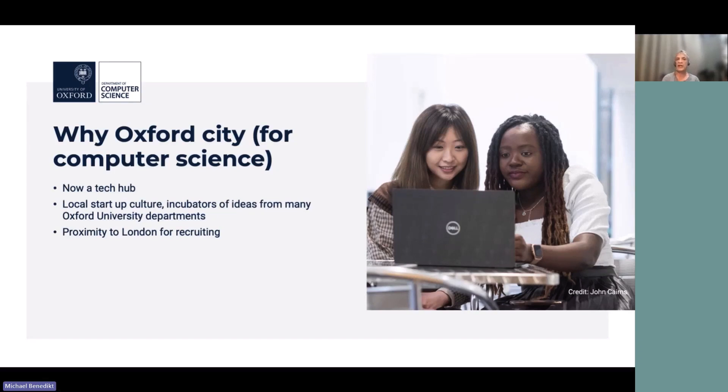Oxford is now really a tech hub. There's a couple aspects to this. It has a big local startup culture. And a lot of this is based on spinoffs from the university, including from our department. There's things like Venio, GIF Blue, Semel, Dark Blue Labs, Oxford Semantic Technologies, some of them just in the last year or two. But there's also spinoffs that are relevant to computer science from many, many other departments, particularly maybe in the bio space and also in the engineering space. So this is very much a place of startups.